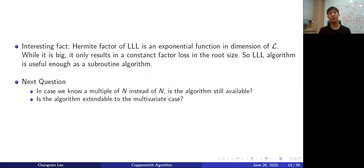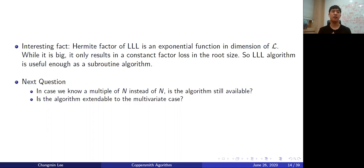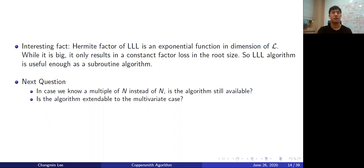As an improvement of the Coppersmith algorithm, you could consider using another lattice algorithm such as BKZ or HKZ. But fortunately, the exponential approximation factor of LLL turns into a constant factor in the size of the root, so LLL is already useful enough. As the next topic, we consider two questions: first, if we know a multiple of N instead of N itself, is the algorithm still available? Second, is the algorithm extendable to multivariate polynomial cases?